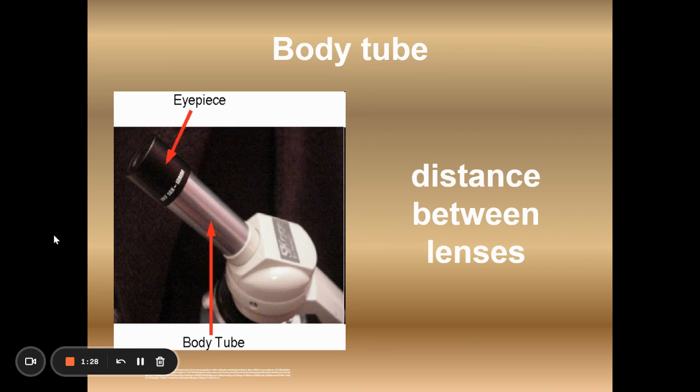The body tube maintains a distance between the lenses and it allows the light to pass up to the eyepiece. So it concentrates the light and moves it up to your eye. It doesn't do anything to help you magnify the image.